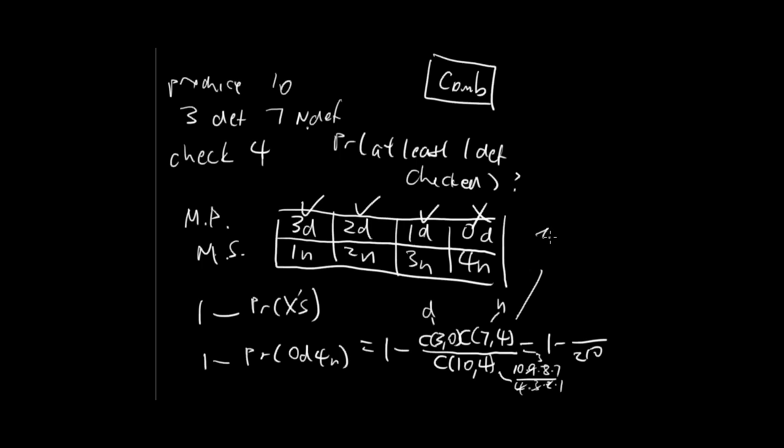And we have seven choose four, which is seven, six, five, four, and then three, two, one. So anyway, you actually go four times, but the four cancels anyway. So the three and six, two cancel. So this is three, thirty-five.